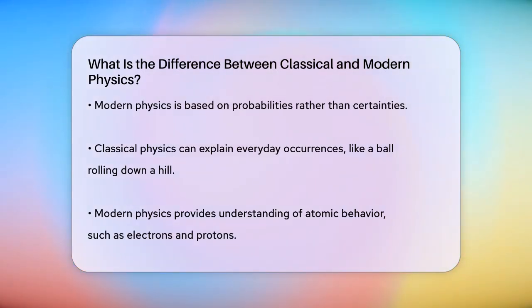Unlike classical physics, modern physics is not deterministic. Instead, it's based on probabilities. This means that instead of saying something will definitely happen, physicists say there's a certain chance it will happen.